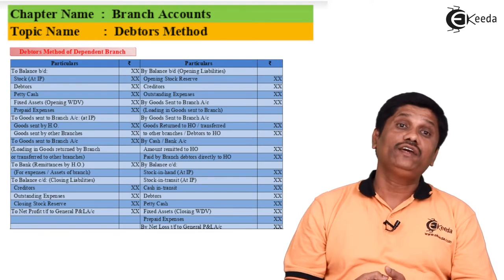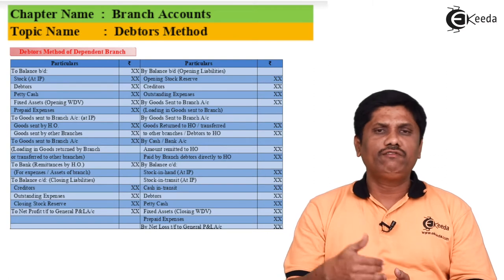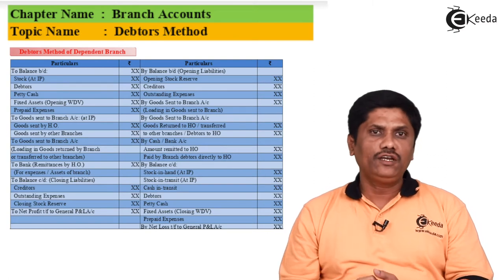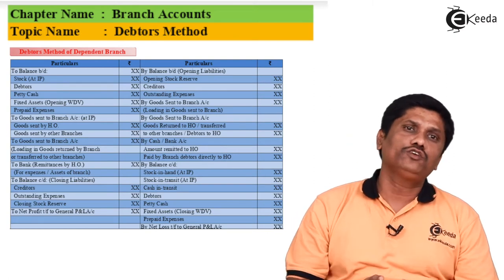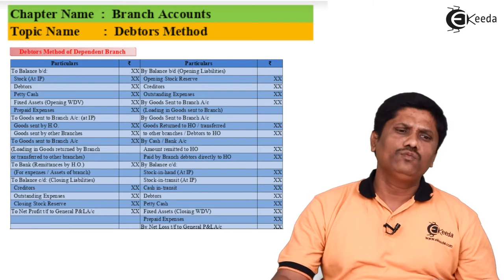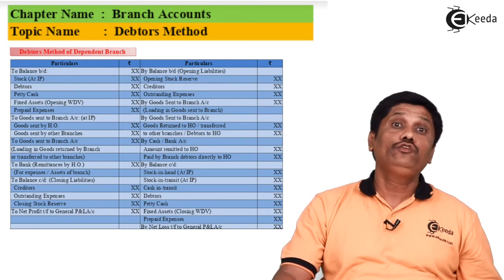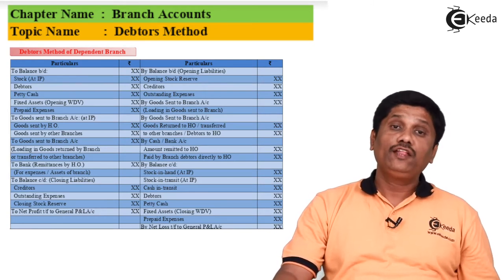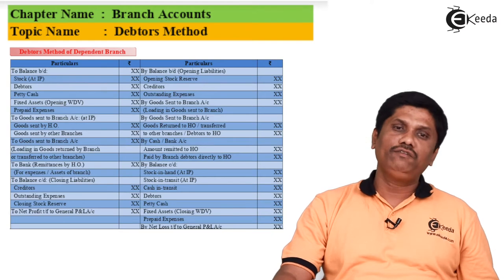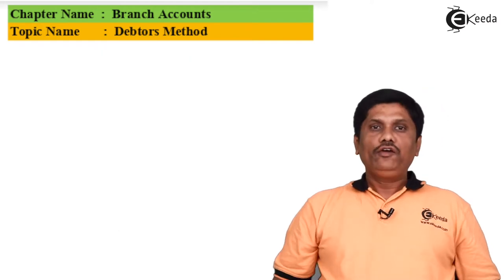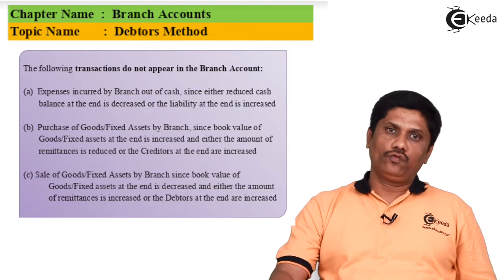So the branch account is basically a replica of the trading and P&L account in the ordinary sense. The head office prepares a simple branch account to find out the profit or loss of the branch. While doing questions, this will become more clear — watch the question videos as well.